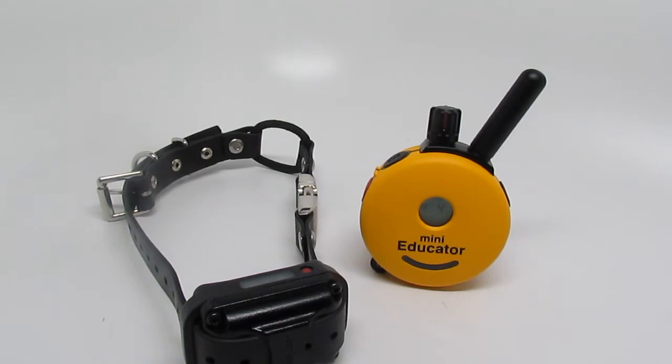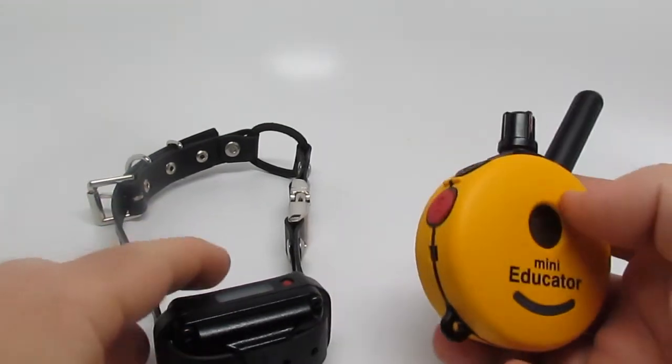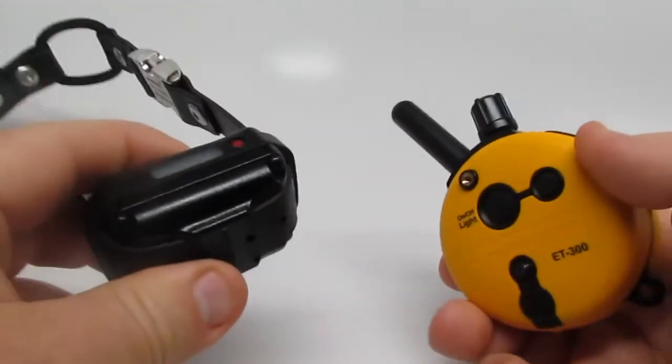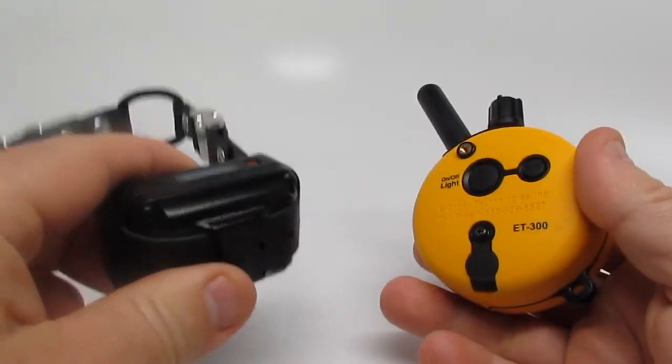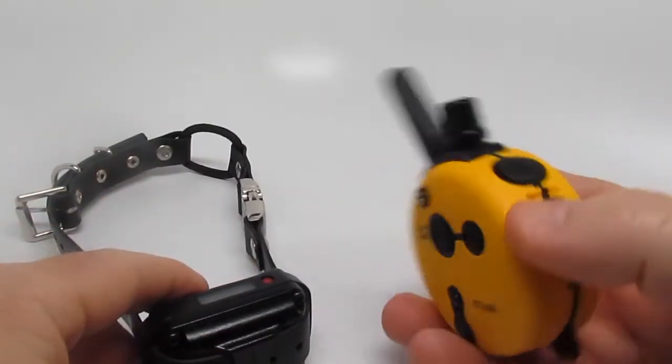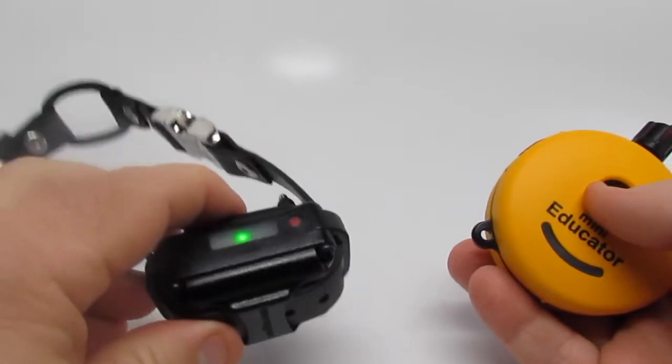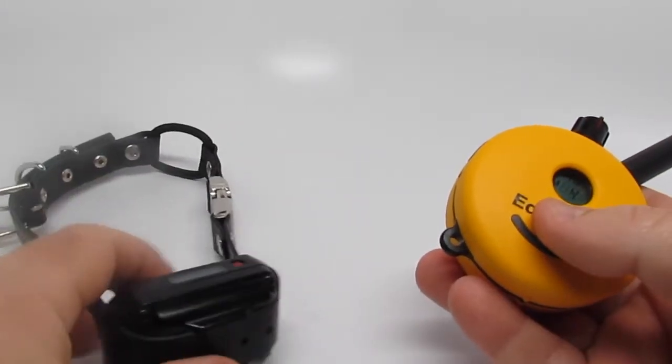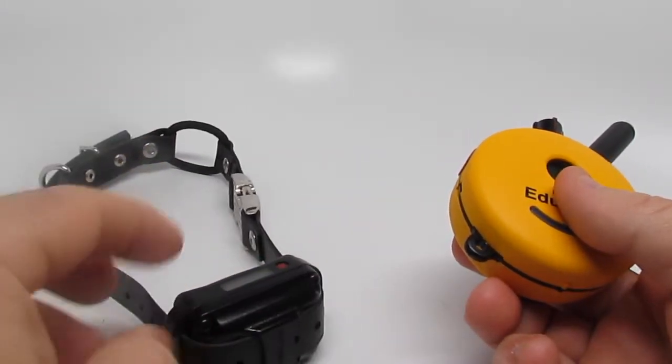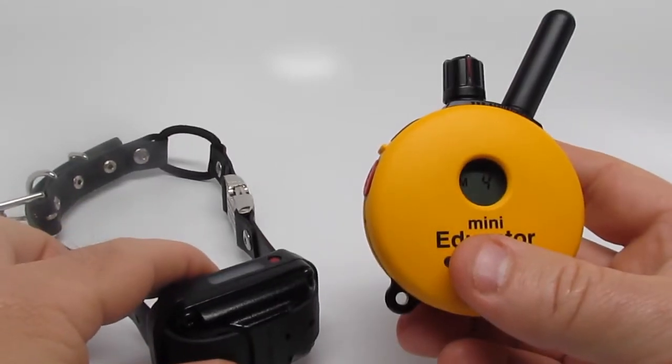Hello, welcome to DAS35's YouTube channel. Today we're covering the Mini Educator and how to pair a collar. So for instance, it's lost, stolen, or broken, and you need to get another receiver collar. I'm going to show you how to pair it up.